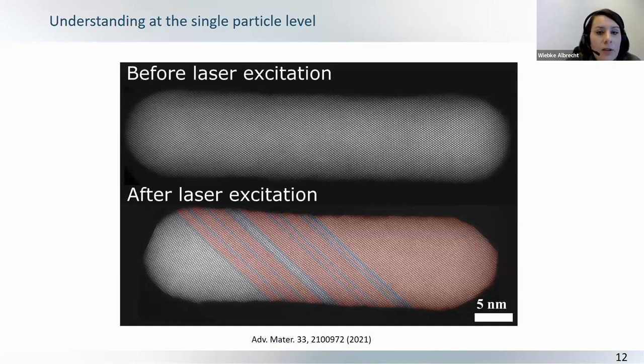So, this is a gold nanorod, the same gold nanorod before and after femtosecond laser excitation. It also has a silica shell. So, you don't see it in the contrast, but the first two observations you can already see in this 2D projection is that it shortens. This is not surprising, but that you have all these parallel twinning defects that you see here in blue.